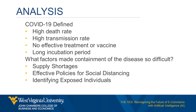Second, high transmission rate. The transmission rate of a disease is measured by its R0, which indicates the average number of people each sick individual will infect. The seasonal flu has an R0 of 1.3, while COVID-19 is estimated to be twice as contagious, with an R0 of between 2 and 3.